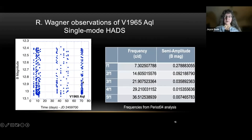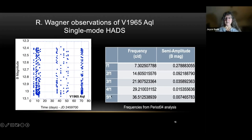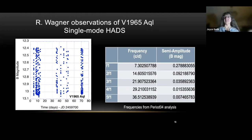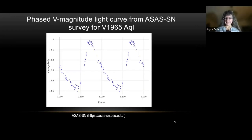After getting this data, he used Period04 to determine the frequencies present. He found a fundamental mode frequency with the highest amplitude — actually 0.27 in B magnitude, making this a pretty high amplitude Delta Scuti star. Looking for other modes, there were none — only multiples of that fundamental mode frequency: 7, 14, 21, 29 — exact harmonics. This star seems to have just one pulsation mode, which is unusual. Looking at the ASAS survey data, the phase-folded light curve is also pretty tight, confirming few modes. This is a ground-based survey using 24-inch telescopes.